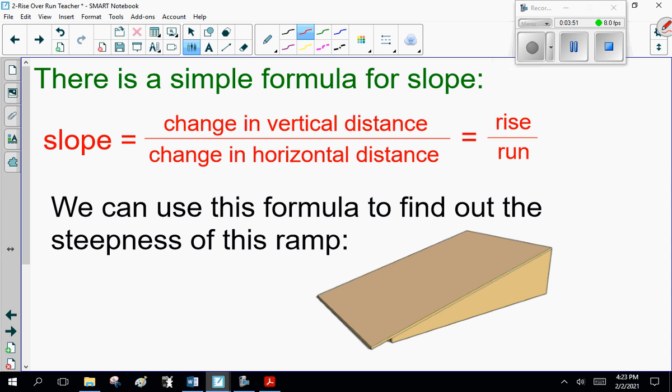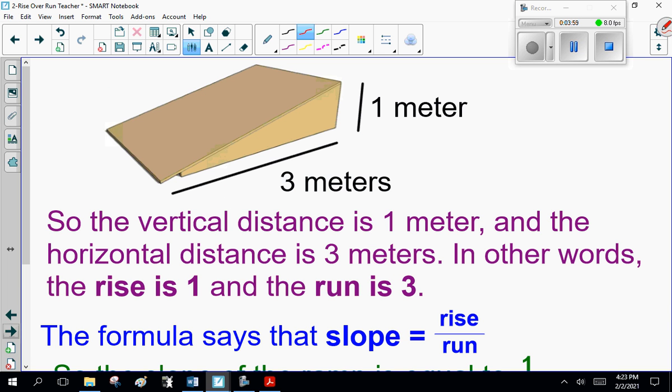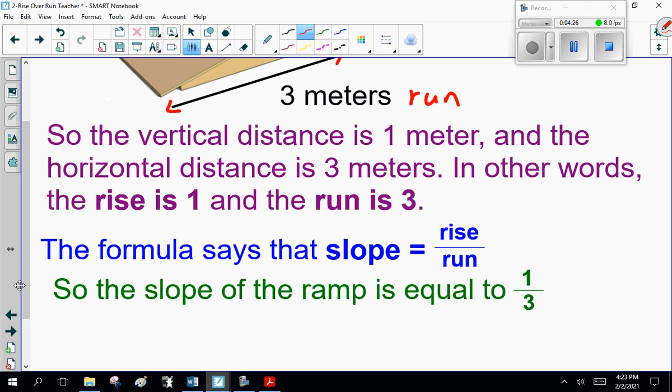Getting back to the notes, you can use this formula to find out the steepness of this ramp. If it is 1 meter by 3 meters, you'll notice that going up and down is the rise, and going across 3 meters is the run. So the vertical distance is 1 meter, and the horizontal distance is 3 meters. In other words, the rise is 1 and the run is 3.